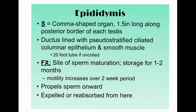The epididymis is a comma-shaped organ about an inch and a half long, located on the posterior border of each testis. It is lined with pseudostratified ciliated columnar cells and smooth muscle — outside of voluntary control.